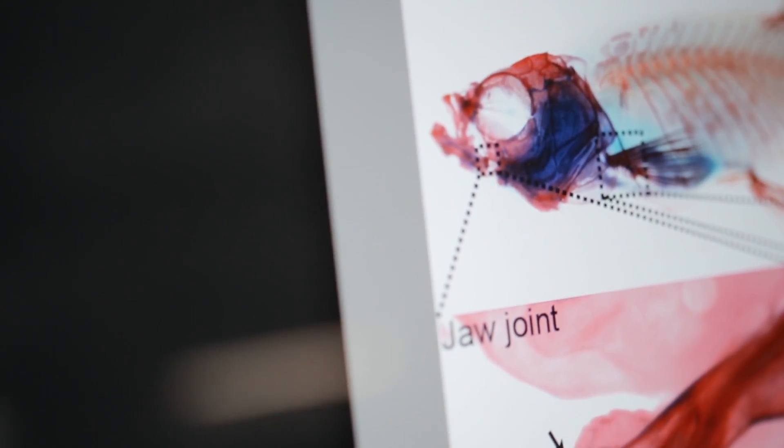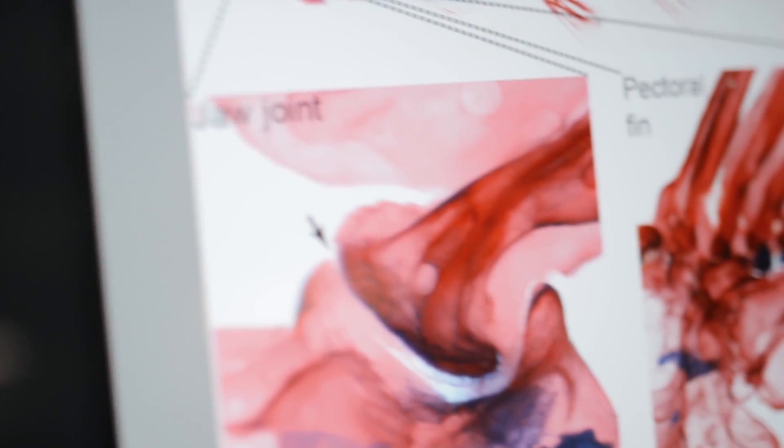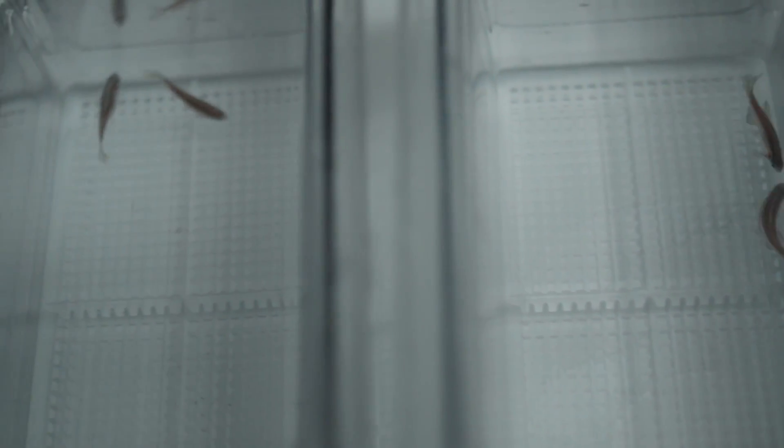A major difference between the human joints that are affected in arthritis patients and the zebrafish joints that I study is that while human joints with arthritis never regenerate their cartilage, zebrafish joints can regenerate both cartilage and ligaments following acute injury.